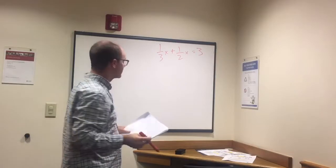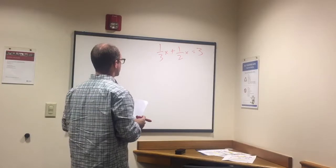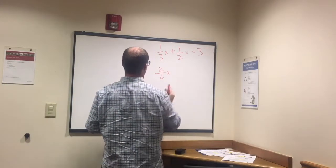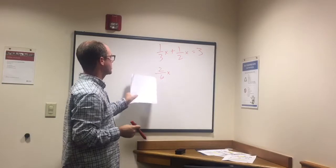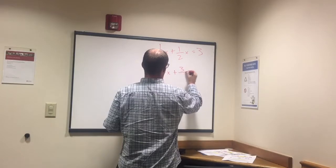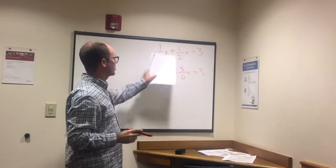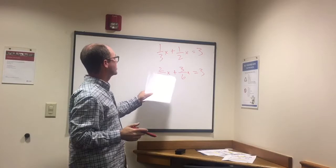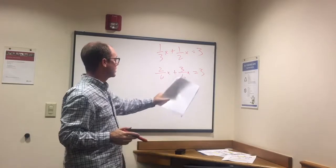We need to find that common denominator. The common denominator will be 6. So 1 third x is the same as 2 sixths x, just multiply the top and the bottom by 2. 1 times 2 is 2, 3 times 2 is 6. So 2 sixths x plus 3 sixths x equals 3. The way I did that is with the 1 half x I multiplied top and bottom, numerator and the denominator by 3. So 1 times 3 is 3, 2 times 3 is 6.